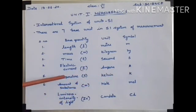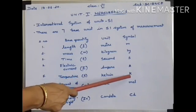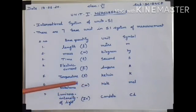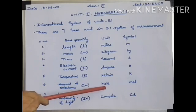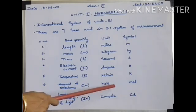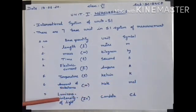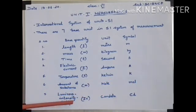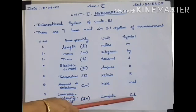The fifth base unit is temperature. The SI unit of temperature is kelvin, denoted by K. The sixth is amount of substance; the SI unit is mole (M-O-L-E), with symbol mol. The seventh and last is luminous intensity of light; the SI unit is candela, with symbol cd.